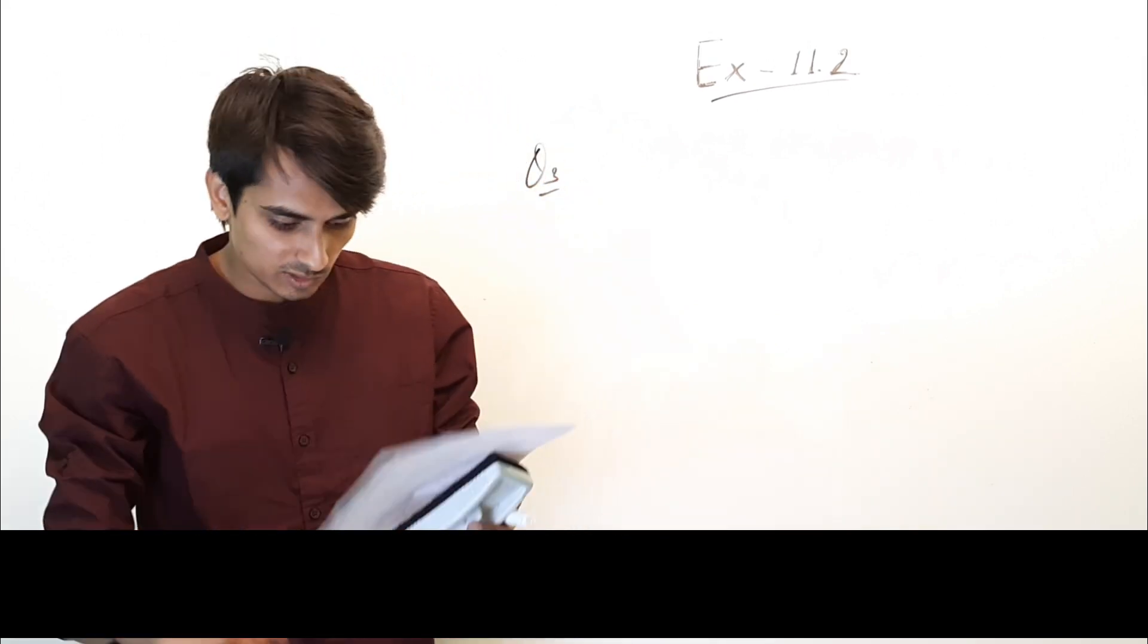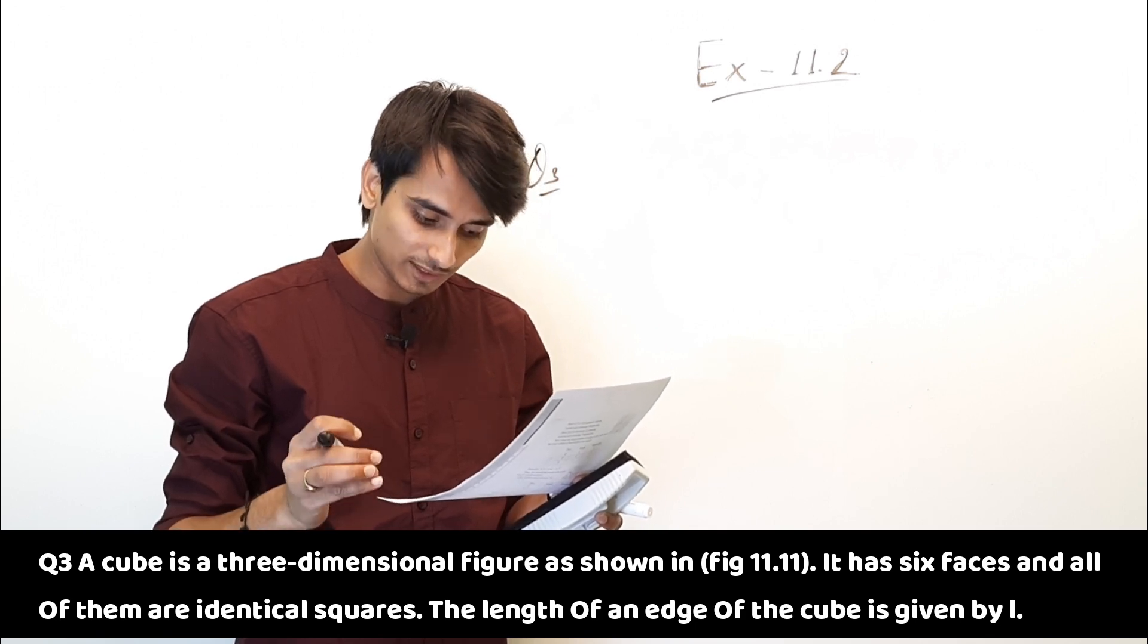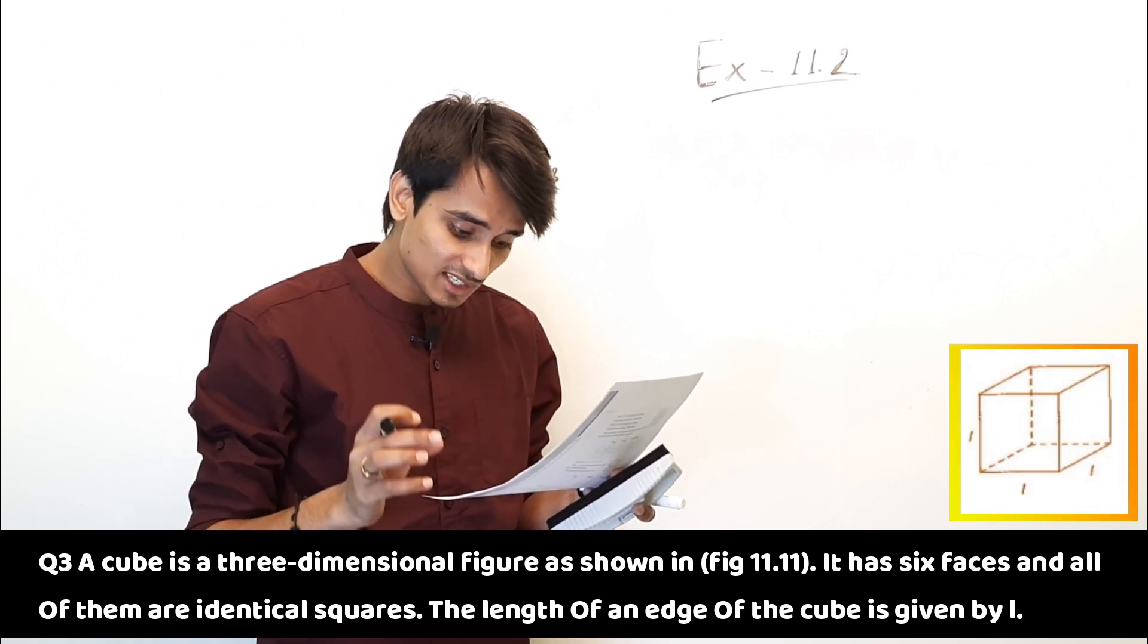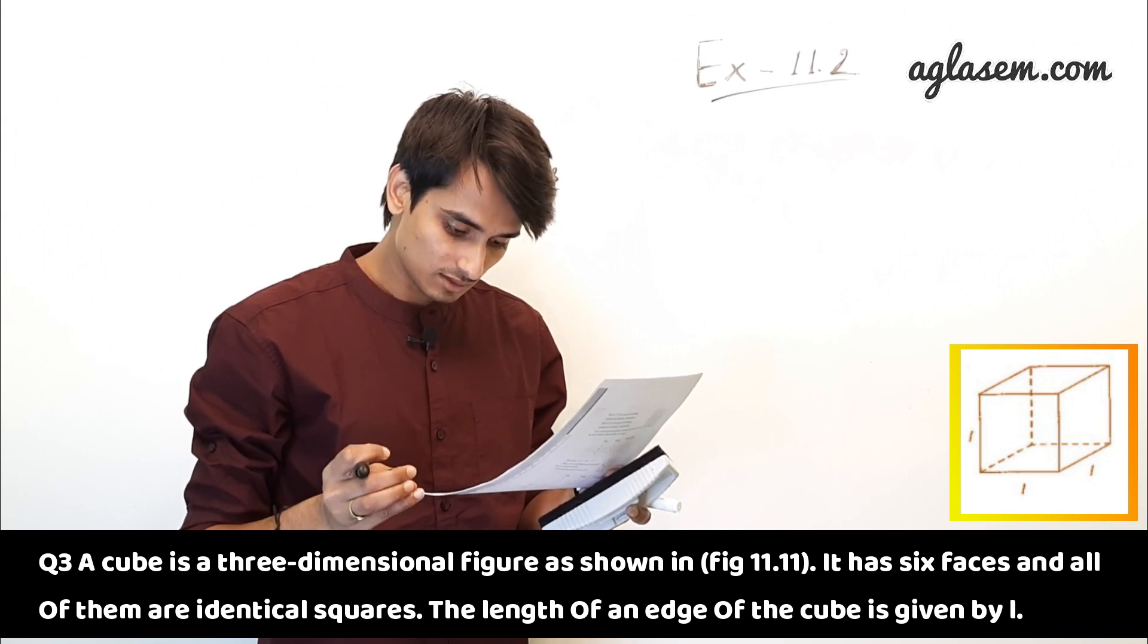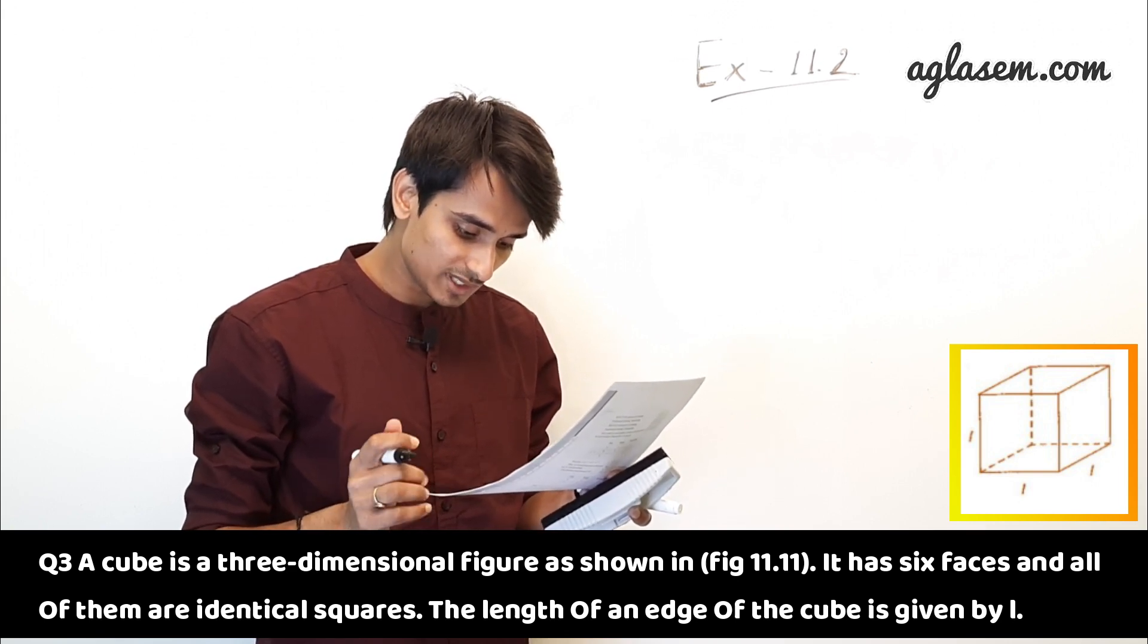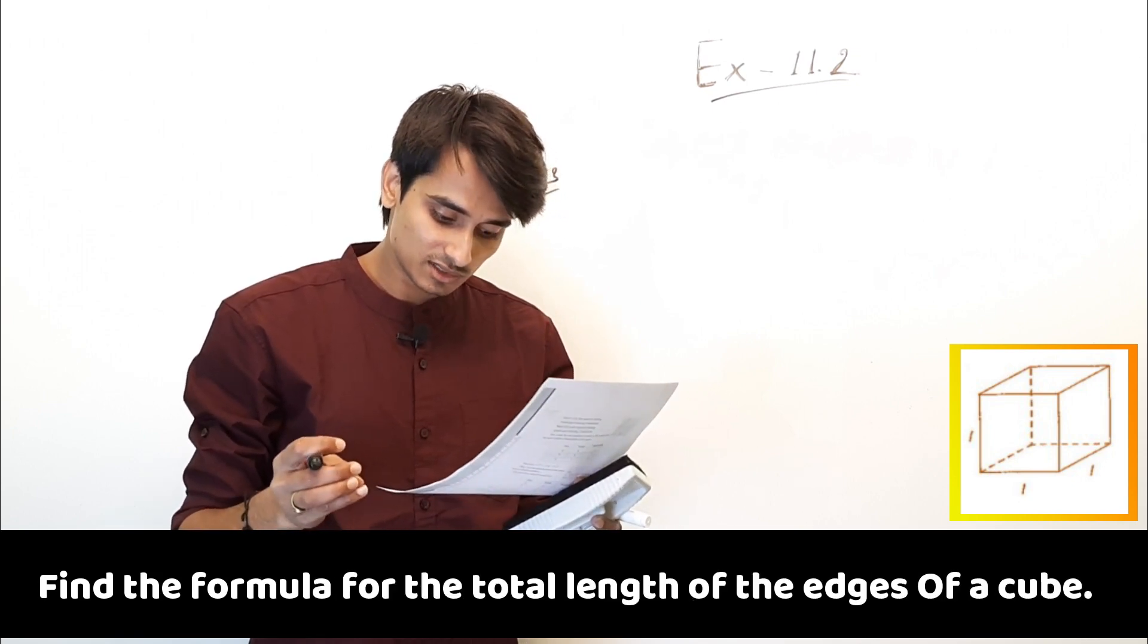Moving to the next question, Question 3: A cube is a three-dimensional figure as shown in Figure 11.11. It has six faces and all of them are identical squares. The length of an edge of the cube is given by L. Find the formula for the total length of the edges of a cube.